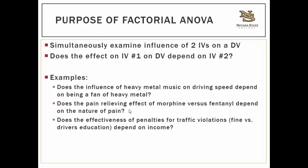The purpose of a factorial ANOVA is to simultaneously examine the influence of two independent variables on a dependent variable. With a one-way ANOVA, you can have multiple levels of one independent variable and test differences between those groups. With the factorial ANOVA, you can have two different independent variables with however many levels you want.